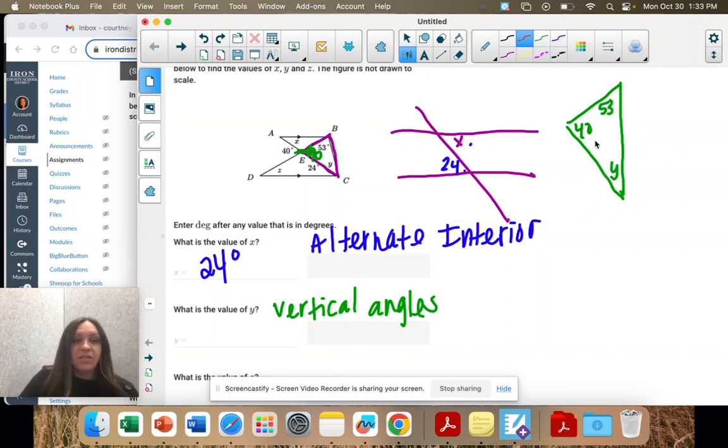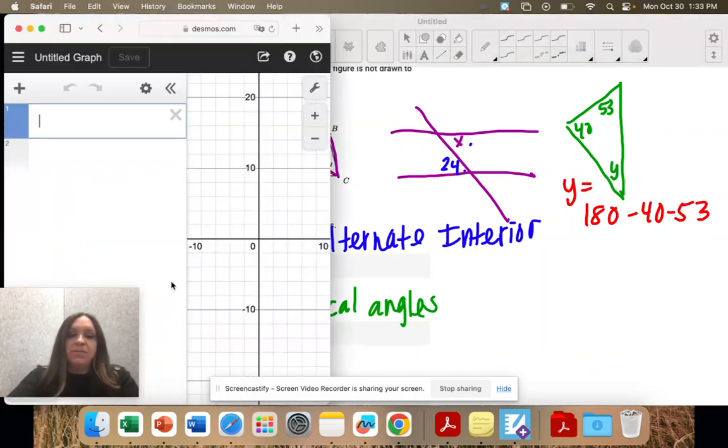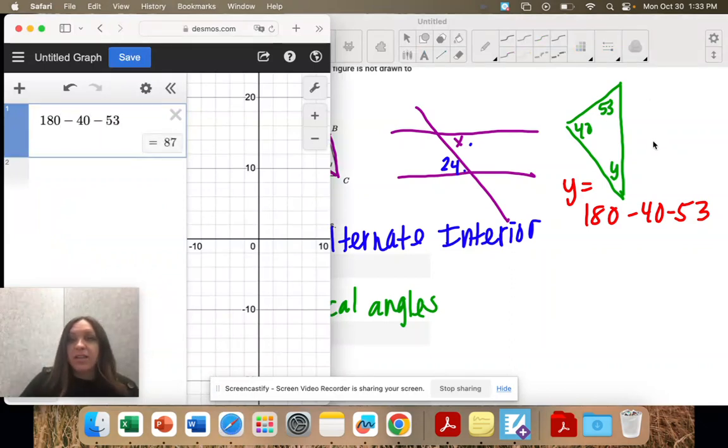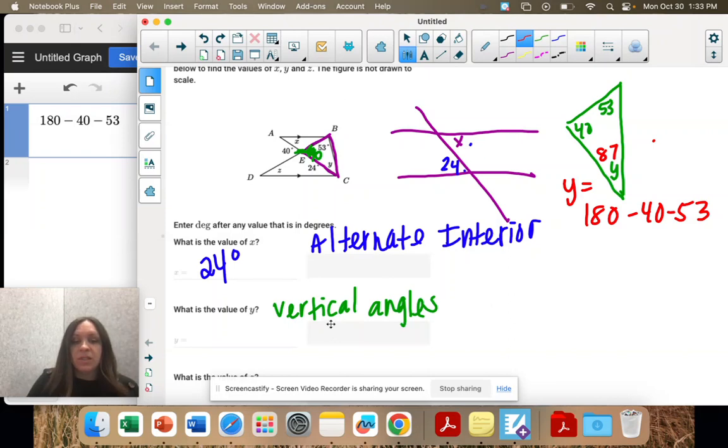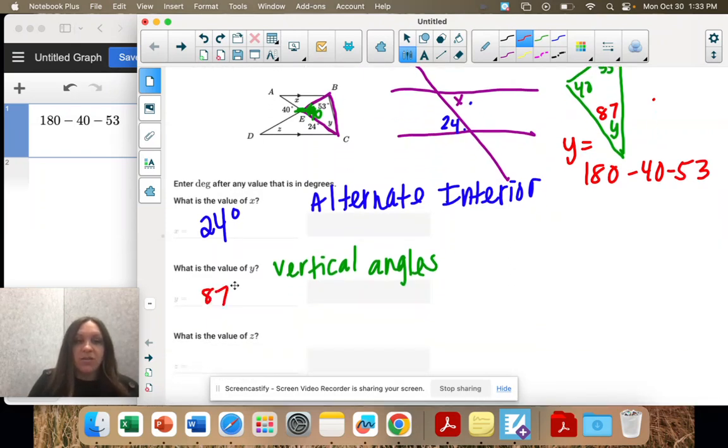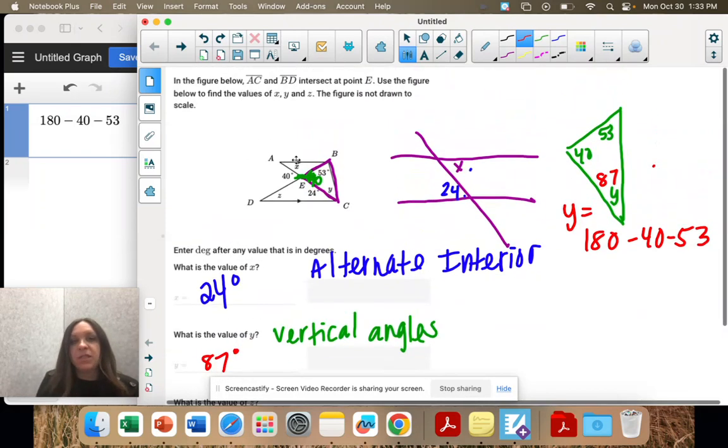So these add to 180. So I'm going to take 180 minus 40 minus 53, and that's going to give me Y. So 180 minus 40 minus 53. So Y is 87. All of those angles are going to add to 180.